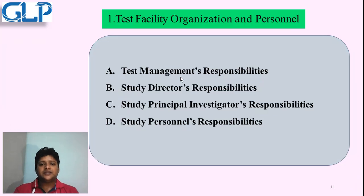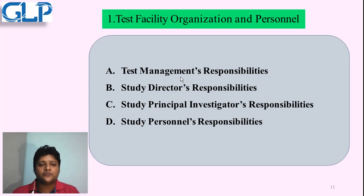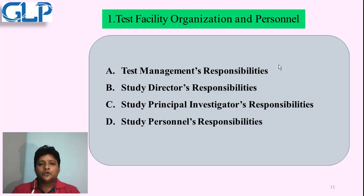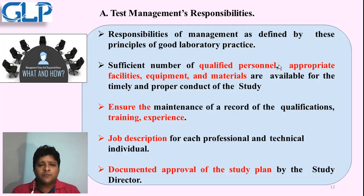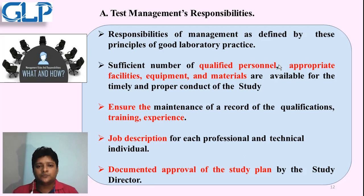First we will see about the test facility organization and personnel — how an organization works and who is responsible for which work. The organization facility is mainly based on four parts: test management responsibilities, study director responsibilities, principal investigator responsibilities, and study personal responsibility. Management responsibility starts with what to do and how to do it — they fix a goal and fix parameters on how to reach that goal. Management is responsible for qualified personnel, appropriate facilities, equipment, and materials to be provided.